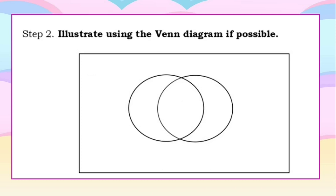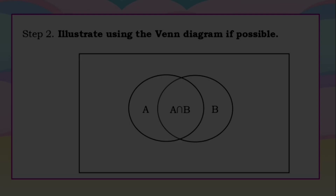For our second step, we have to illustrate using the Venn diagram if possible. I recommend you use the Venn diagram, because this is the most comprehensive way to learn what union sets and differences are. Let's illustrate A for the first circle, B for the second circle, and A intersect B for the overlapping region.